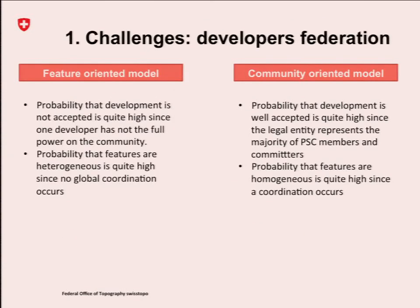We had three challenges. First, to federate the developers. In the feature-oriented model, the probability that development is not accepted is higher compared to the community-oriented model. Because in the community-oriented model, you have all the main developers — they will discuss together and take responsibility for the development. And there is also the question of homogeneity: the legal entity grouping all main actors is able to create a more homogeneous software compared to the feature-oriented model.